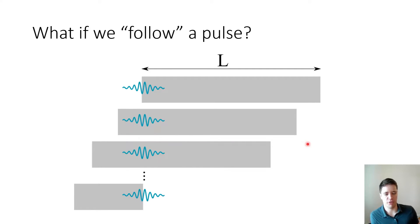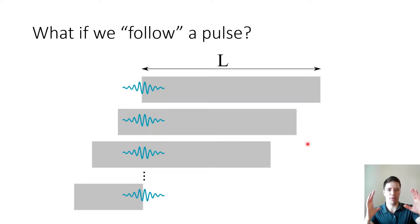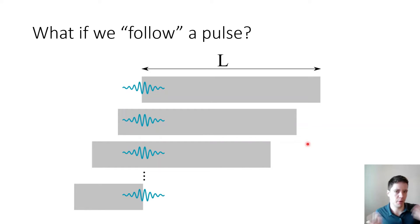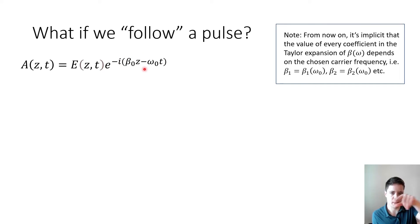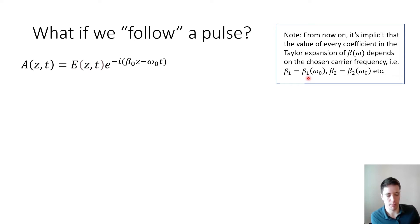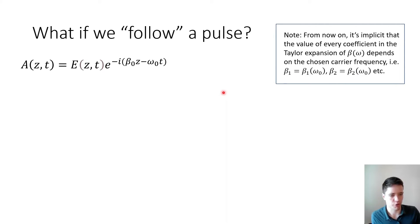Now let's ask a different question: instead of comparing two separate pulses, what happens if we follow a single pulse as it propagates through the medium? Rather than watching from outside, we track the pulse as it moves — it then looks as if the pulse is stationary and the medium propagates past it. To analyze this, we rewrite the expression looking at the envelope field rather than the actual electric field, removing the wiggling behavior by multiplying by the complex conjugate of the outer exponential. From here, beta1, beta2, etc. are implicitly evaluated at the carrier frequency.